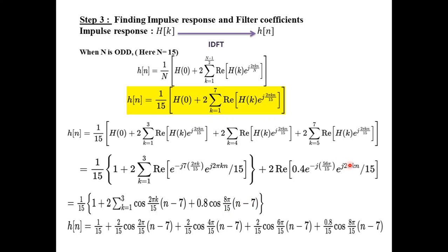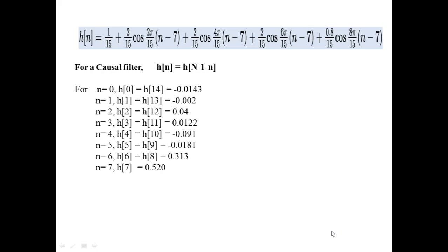Here we have k is equal to 4. So when k is equal to 4, obviously, this will become 8π. So here actually, instead of 2πk n, you can simply write it as 8πn. So this 8πn only when you take it as common, you will be getting it as 8π by 15 into n minus 7. So careful simplification of this will give you what is the value of h of n. From this h of n, you can apply the symmetric property and find out the filter coefficients.